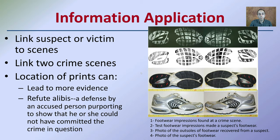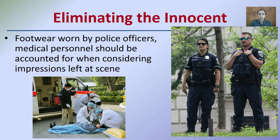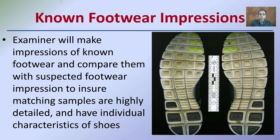All footwear a suspect owns should be seized for comparison. Shoes are needed to make test impressions, which is very important for identifying those individual characteristics — you want to capture them as quickly as possible between when the crime was committed and when you can get your hands on those pieces of evidence. An examiner will make impressions of known footwear and compare them to the suspect's footwear impressions to ensure matching samples are highly detailed and have individual characteristics of the actual soles, which really helps increase the odds of a positive identification or a high correlation of a match.